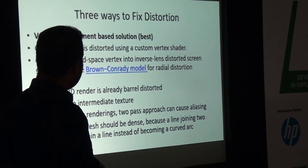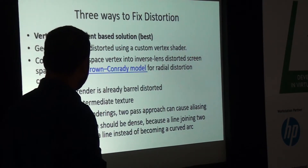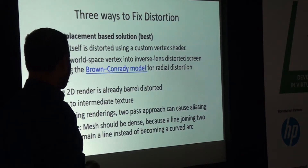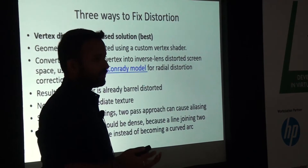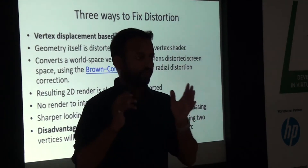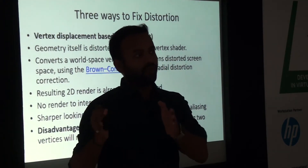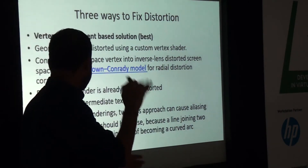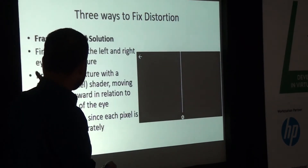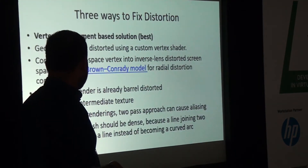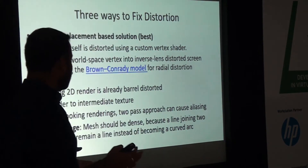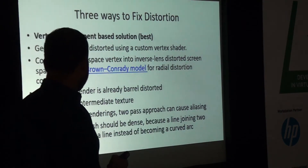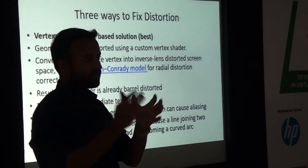The vertex displacement method converts world space vertices into inverse lens distorted space using the Brown-Conrady model for radial distortion correction. The resulting 2D render is already barrel distorted — there is no render-to-intermediate-texture step. This saves power because the operation happens in the vertex shader, which processes far fewer elements than pixels. It also eliminates the need for double-pass rendering required by the first method, making it a single-pass rendering approach.